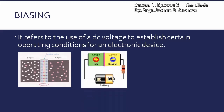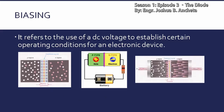As illustrated here, meron tayong DC voltage in the form of battery connected in this way. Para mabigyan natin ng extra energy, extra force yung mga electrons para ma-overcome yung depletion region. And then pag na-overcome ang depletion region, yung mga electrons makakatawid papuntang P region — from N region papuntang P region. So kapag nagkaroon ng flow of electrons, meron na tayong electric current.